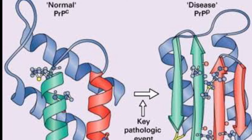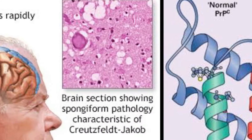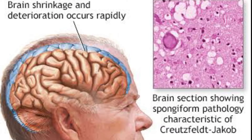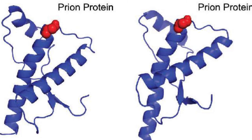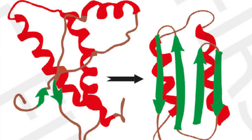A prion is a type of protein that can cause disease in animals and humans by triggering normal healthy proteins in the brain to fold abnormally. The prion mode of action is very different to bacteria and viruses, as they are simple proteins devoid of any genetic material. Once a misfolded prion enters a healthy person — potentially by eating infected food — it converts correctly folded protein into the disease-associated form. To date, nobody knows quite how this happens.